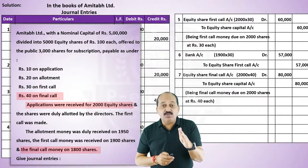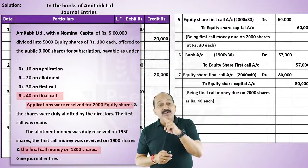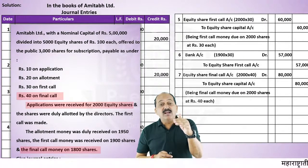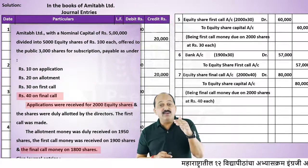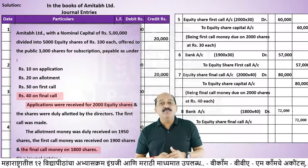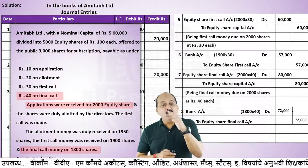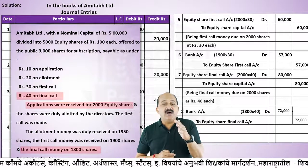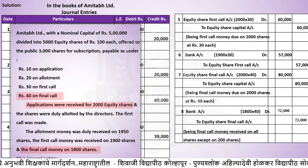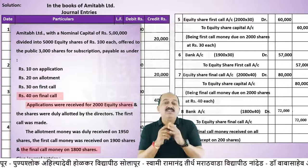2000 shares पे final call due था, लेकिन 1800 shares का ही final call मिला - 200 shares का Rs.40 per share = 8,000 रुपये नहीं मिले। Total due 80,000 minus 8,000 = 72,000 actual received। Entry: Bank Account debit 1800 × 40 = 72,000 to Equity Share Final Call Account 72,000। Narration: Being final call money received on 1800 shares at Rs.40 each (all shares except 200 shares)।